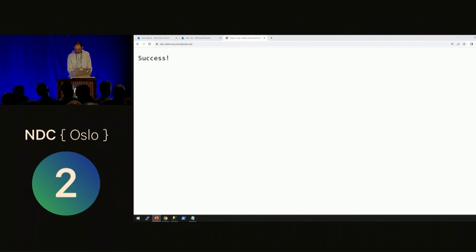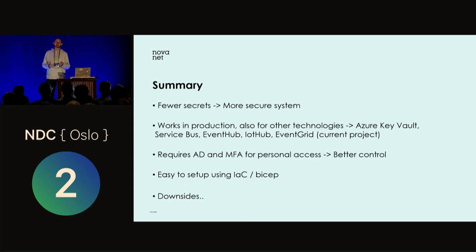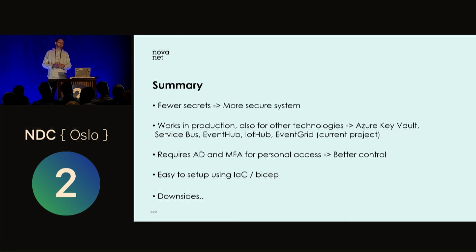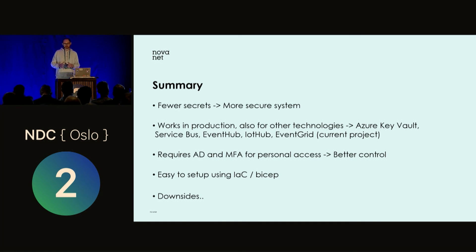Back to the presentation. To summarize: fewer secrets gives you a more secure system. This works in production — in my current project we're using managed identity for Azure Key Vault, Azure Service Bus, Event Hub, IoT Hub, and Event Grid. Everything uses managed identity. We do have one secret in Azure Key Vault: it's the API key for SendGrid. For external secrets, of course you can't use managed identity — Azure Key Vault is perfect for that. But to access Key Vault to retrieve those external secrets, you can use managed identity.